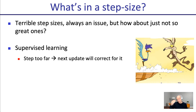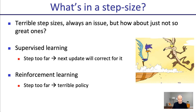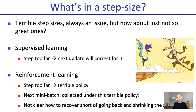In supervised learning, if you have a bad step size, the next update will correct for it — the data is waiting to give you a correction. But in reinforcement learning, if you have a bad step size, you have a terrible policy. This terrible policy gives you terrible data, and the terrible data might not have any signal in it. Now you don't get a correction. And essentially all your learning might be lost, because your new data is just not informative anymore.